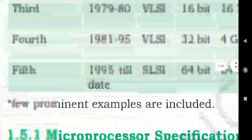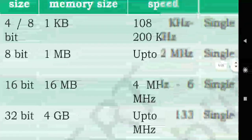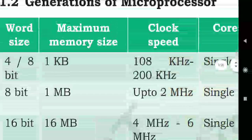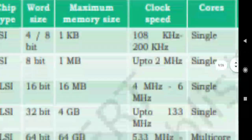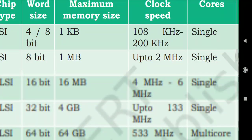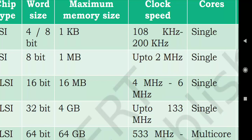Here we can see that all the information is already given. The maximum memory size of the first generation is 1 kilobyte, that is 1024 bytes, or in mathematical sense we can write it as 2 raised to power 10 bytes. The second generation had the maximum memory size of 1 megabyte, or 1024 kilobytes, that is 2 raised to 20 bytes.